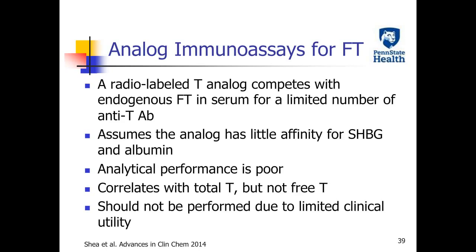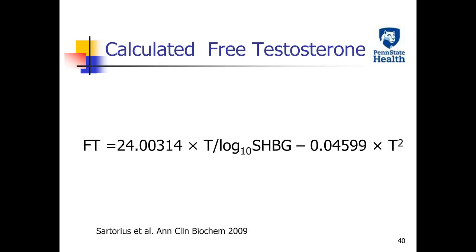Analog immunoassay is a method using a radio-labeled testosterone analog to compete with endogenous free testosterone in serum for a limited number of anti-testosterone antibodies. It is assumed that the analog has little affinity for sex hormone binding globulin and albumin, but this may not be true. So the analytical performance of this method is poor, and the result correlates with total testosterone but not free testosterone levels. Therefore, this method should not be used due to very limited clinical utility.